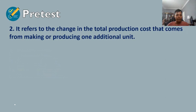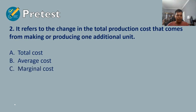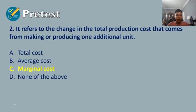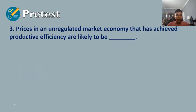Question number two refers to the change in the total production cost that comes from making and producing one additional unit. A) total cost, B) average cost, C) marginal cost, or D) none of the above. The answer for number two is letter C, marginal cost.